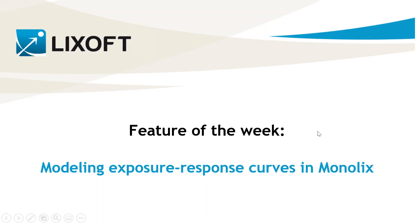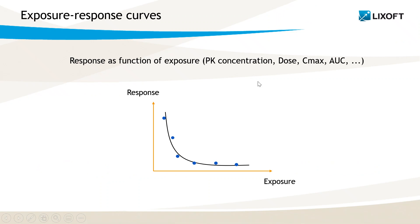Exposure-response curves give the response to a drug as a function of exposure, which can be the dose or a measure of drug concentration in the body such as the Cmax or the AUC. Individual exposure-response curves can be derived from post-processing of PKPD model predictions, or they can be directly modeled in Monolix if the exposure is included in the dataset. Let's see the different cases.